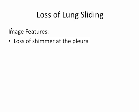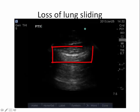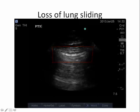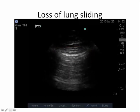Loss of lung sliding is the loss of the shimmer or movement at the level of the pleura with respiratory movement, and this is shown here. As you can see in this patient, there is respiratory movement, but there is none of the shimmer or movement that you would associate with a normal or healthy pleura.